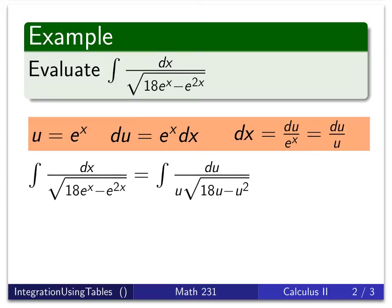And so again, our integral becomes dx, which is du over u. We change the e to the x into u and e to the 2x into u squared. So now I have it in a simpler formula.